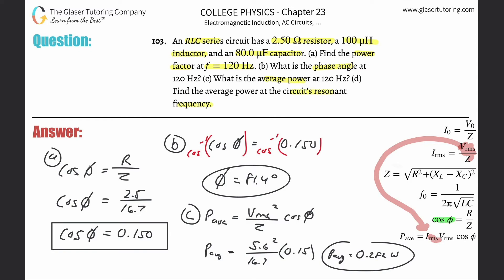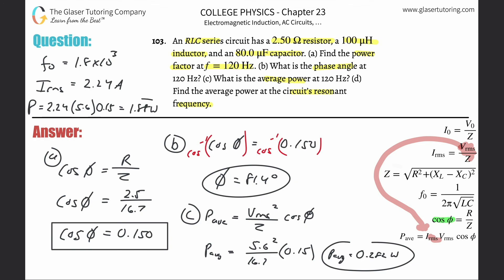Now find the average power at the circuit's resonant frequency. From problem 101, the resonant frequency was about 1.8 × 10⁻³ and the RMS current at resonance was about 2.24 amps. So the average power is I_rms × V_rms × cos(φ) = 2.24 × 5.6 × 0.15 ≈ 1.88 watts.